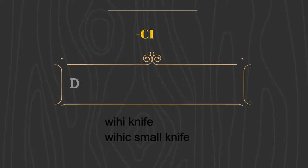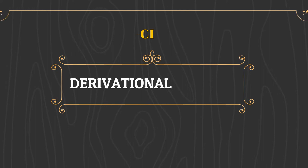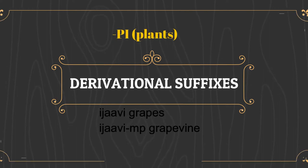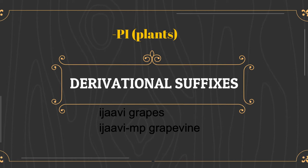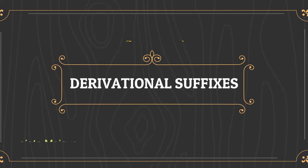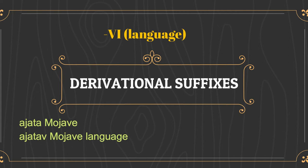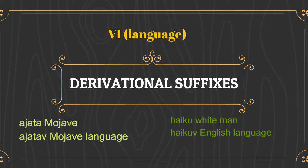For example, wihi means knife, while wihitsi means small knife. The suffix -p is used for plants: iyavi means grapes, while iyavip means grapevine. The suffix -v is used for languages: ayata means Mojave, while ayatav means the Mojave language. Haiku means white man, while haiku-v means the English language.